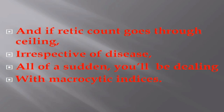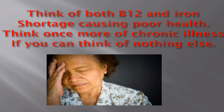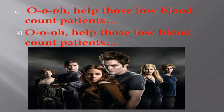And if the reticulocyte count goes through the ceiling, irrespective of disease, all of a sudden you'll be dealing with macrocytic indices. But if the reticulocyte count is rather normal, think of bone marrow not doing its work, splenic sequestration, or rehydration gone berserk. Think of B12, folate, and iron shortage causing poor health, and think once more of chronic illness if you can think of nothing else.